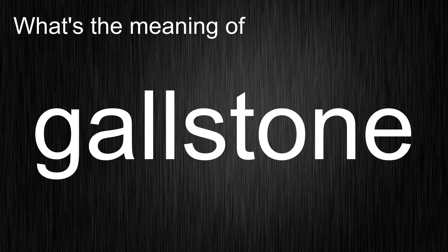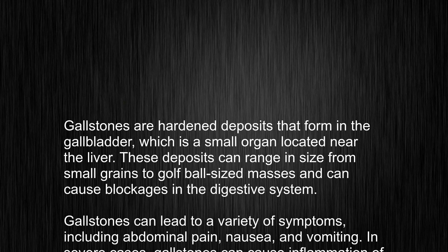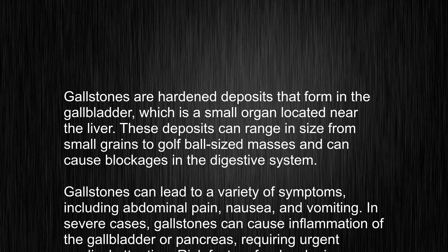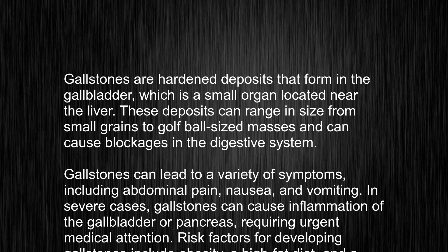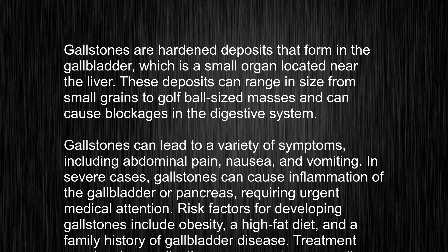Meaning of gallstone. Gallstones are hardened deposits that form in the gallbladder, which is a small organ located near the liver. These deposits can range in size from small grains to golf ball-sized masses and can cause blockages in the digestive system.